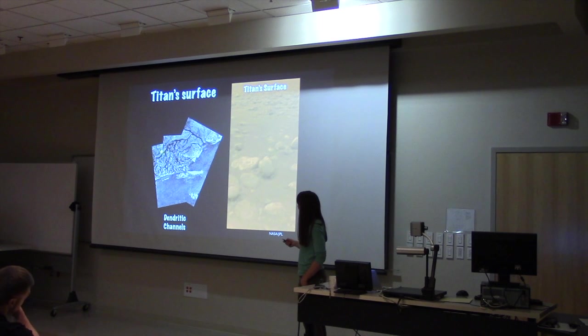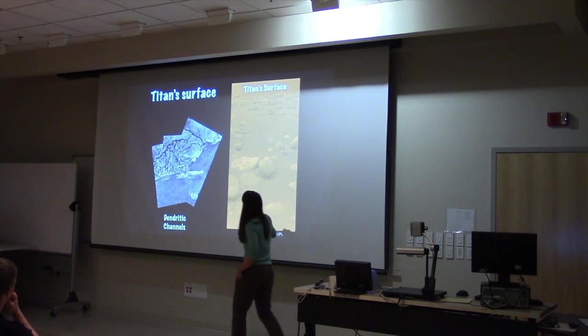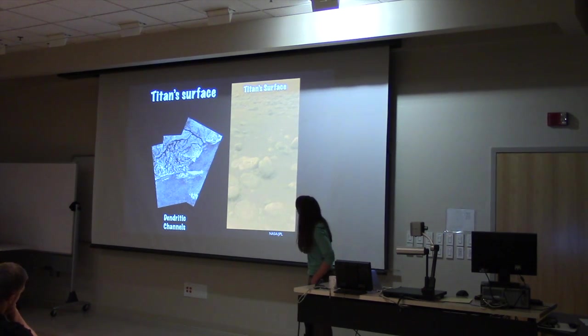The Huygens probe sent back about 350 images. It survived on the surface for about 90 minutes, and that's about what it was planned or designed to do. So here's one of the images it sent back as it was descending. And if you are a geologist, or maybe you've had geology, this might look familiar.